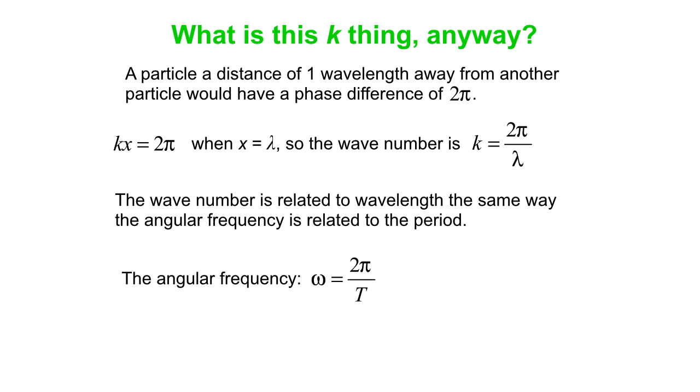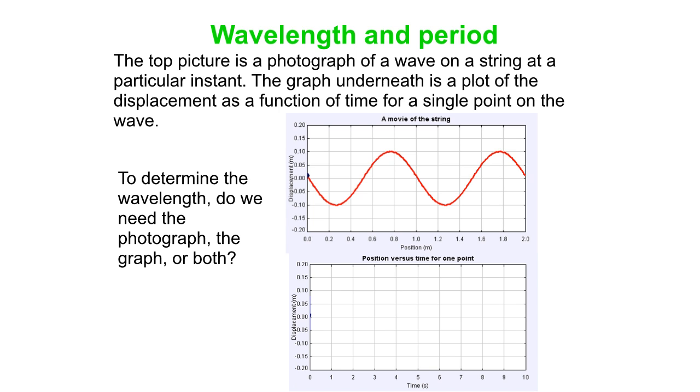That's ω = 2π/T. Now, consider this, top picture is a photograph, the bottom picture is going to show a graph of a single point, what it does. To determine wavelength, do we need the photograph, the graph, or both?